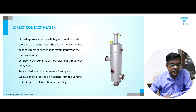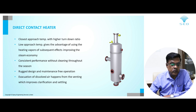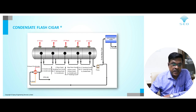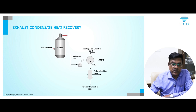The direct contact heater is a versatile heater — it can be used through evaporator vapors for concentrating juices, heating juices, or in waste heat recovery systems. Evacuation of dissolved air happens from the venting, which improves clarification and settling. SCD also supplies condensate flash systems along with evaporators or individually, as well as an exhaust condensate heat recovery system from exhaust steam condensate, which can be used for heating supply to centrifugal machines at 100 degrees centigrade.